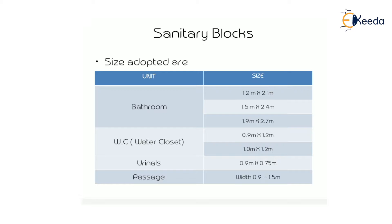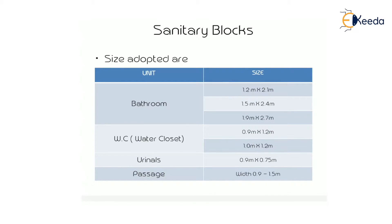According to the requirement, we can change the dimension of a bathroom from these three options — we can take any one as per our requirement. The size for a water closet is 0.9m × 1.2m or 1.0m × 1.2m. The size for a urinal is 0.9m × 0.75m.